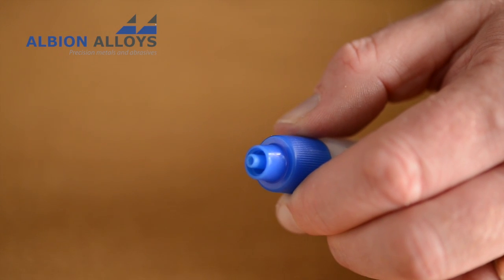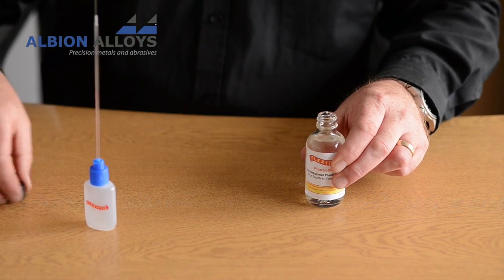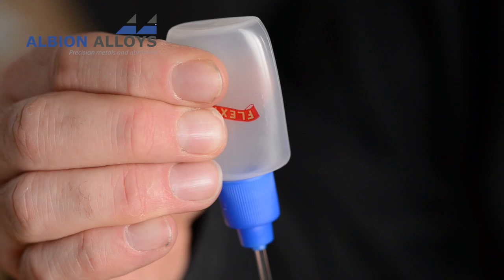Using the filler bottle as a pipette, place the needle in the solvent bottle and squeeze gently, thus drawing solvent up into the applicator.